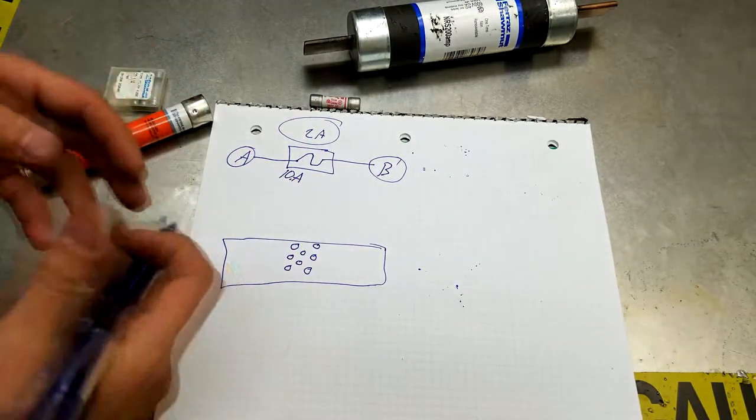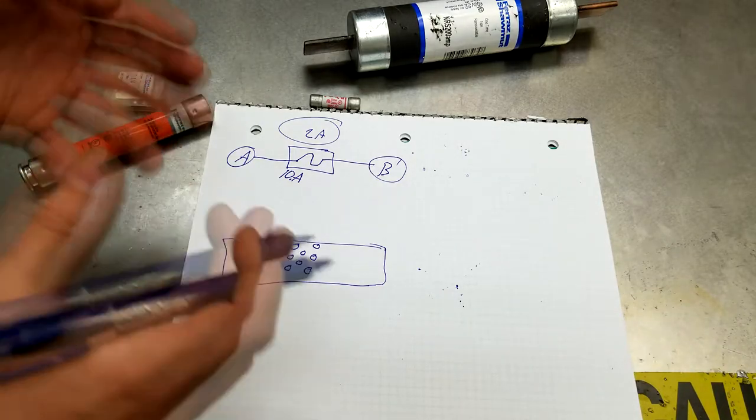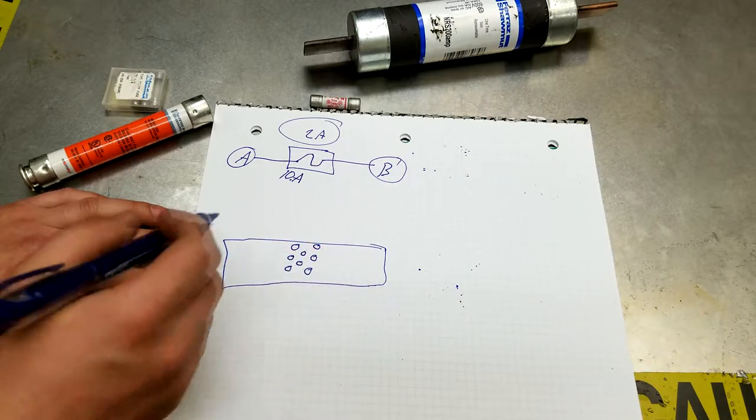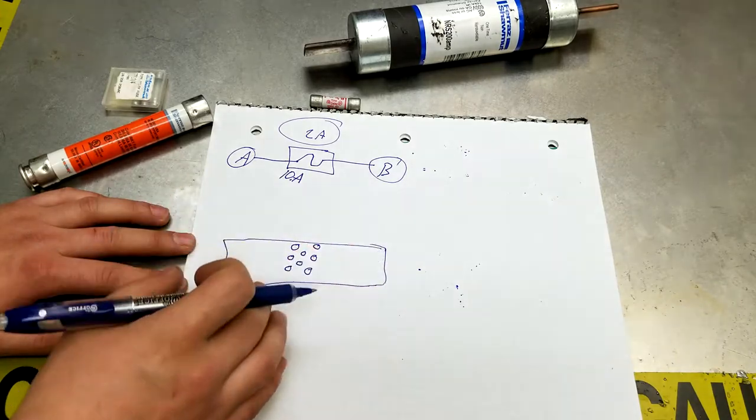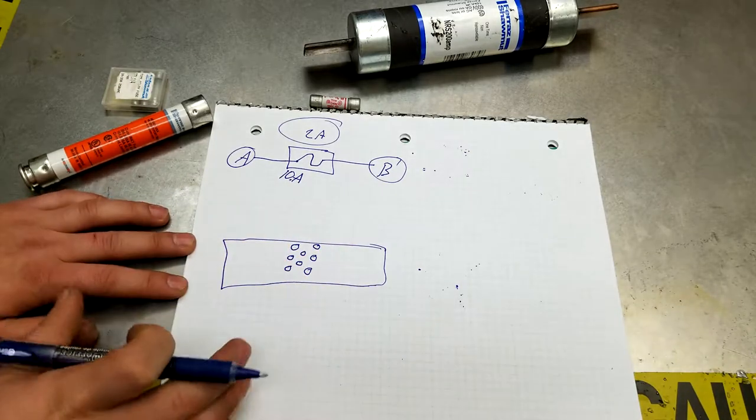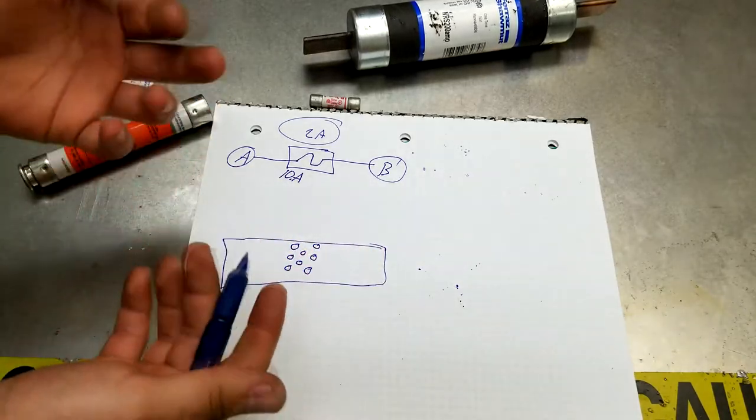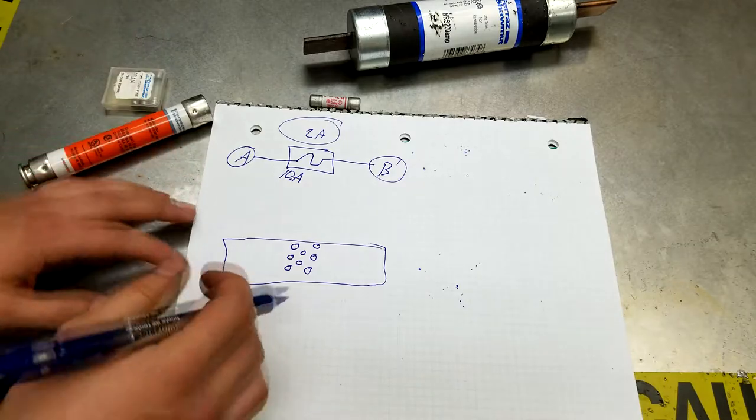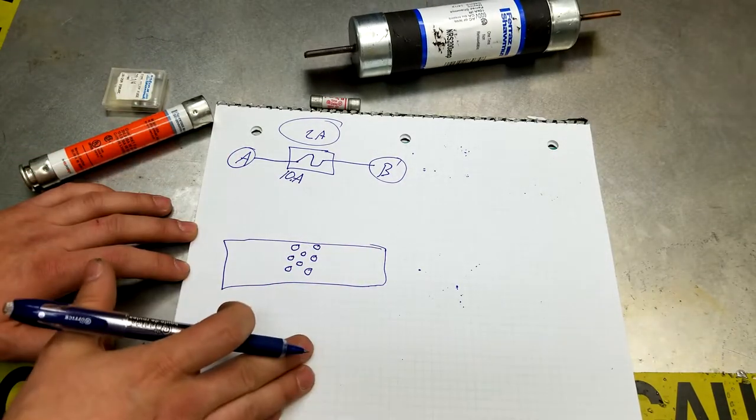But when it heats up, when the current exceeds, the current can exceed the rating of the fuse for some time. Let's say it's powering your motor. So when the motor starts, it will be pulling, for example, five times more current than it's rated for. So this will allow for that. It will heat up, but it will not blow, because it's designed to pass a certain current through for some time. But when it heats up, it will start melting, and when it melts it will open, therefore disconnecting the power.